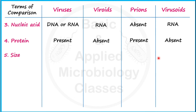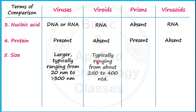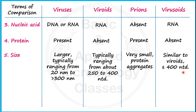Regarding size: viruses are the largest, typically ranging from 20 nanometers to more than 300 nanometers. Viroids typically range from about 250 to 400 nucleotides. Prions are very small protein aggregates. Virusoids are similar in size to viroids, having equal to or fewer than 400 nucleotides forming their RNA.